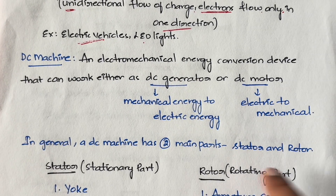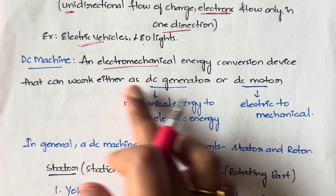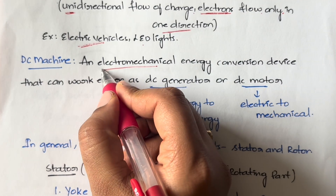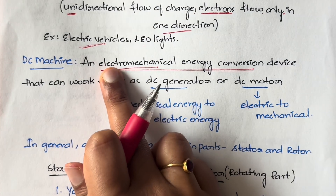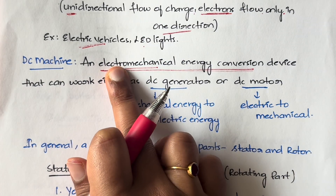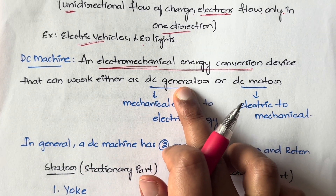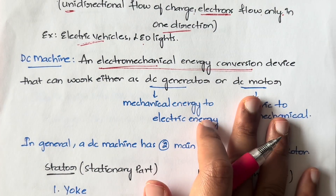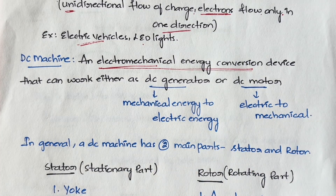So what is a DC machine? A DC machine is basically an electromechanical energy conversion device which can either work as a DC generator or a DC motor. We call it electromechanical energy conversion because it converts electrical energy into mechanical energy, or mechanical energy into electrical energy, depending on whether we are using it as a generator or a motor.